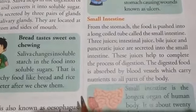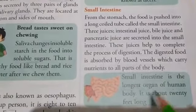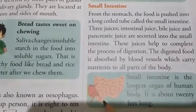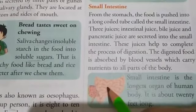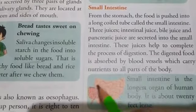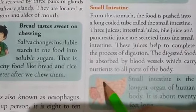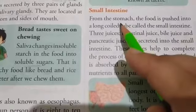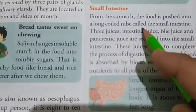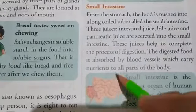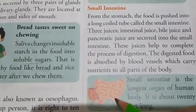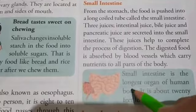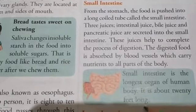Next one is the small intestine. The small intestine is the longest organ of the human body. You can see it is a long coiled tube — coiled means in the shape of a number of rounds. From the stomach, the food is pushed into this long coiled tube called the small intestine. It is about 20 feet long.